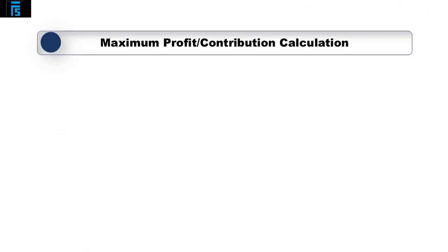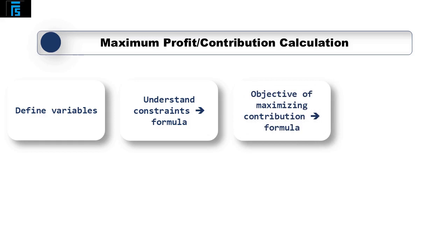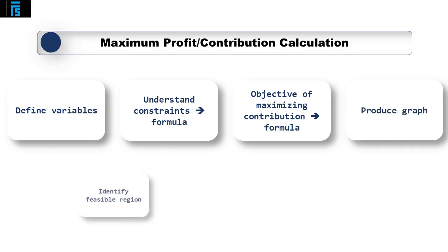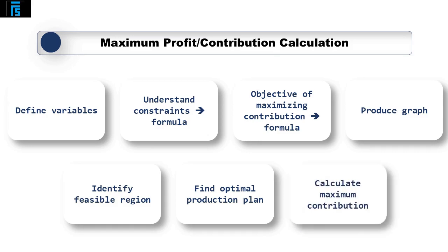There are a number of steps we need to go through to calculate the maximum profit or contribution that can be generated when there is more than one limiting factor. The first step is to define the variables. We then need to understand our constraints and turn this information into formulae. We will also turn our objective of maximising contribution into a formula. Once we have our various formulae we can then produce a graph and from this identify a feasible region, which is the area of the graph within which we meet all of the various constraints. Within this feasible region will be the optimal production plan. Once we know our optimal production plan we can then calculate the maximum contribution we can generate, in much the same way as we do when performing limiting factor analysis. We will use the remainder of this video to demonstrate this process with an example.